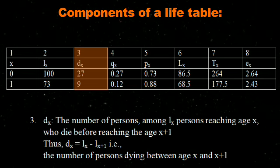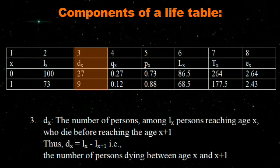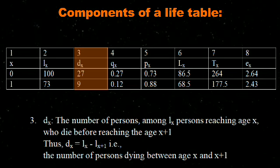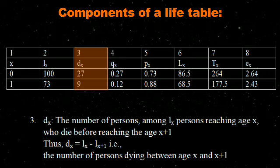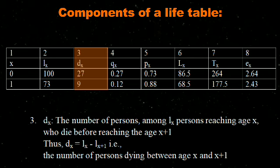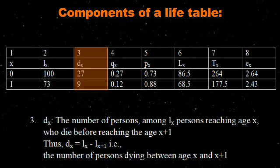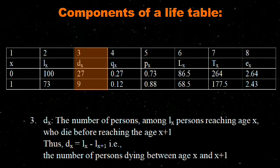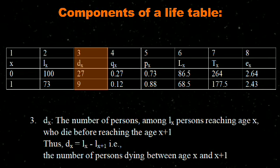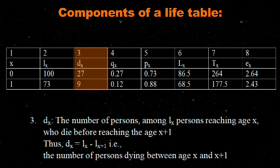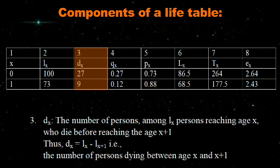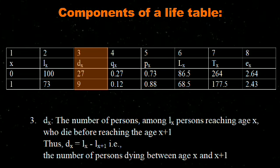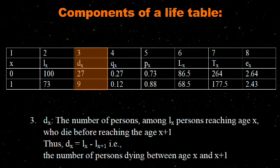At age 0, there were 100 persons but only 73 were alive to celebrate their first birthday, so there were 27 deaths. Similarly, there were 73 people at age 1 and 9 of them died before reaching age 2.